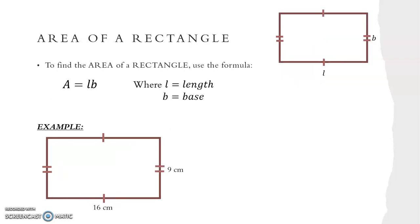For the area of a rectangle we use the formula A equals LB, where L equals the length and B equals the base or the breadth. For our example we write out our formula A equals LB and substitute in our length of 16 and our breadth of 9. So 16 times 9 into our calculator gives us 144 centimetres squared.